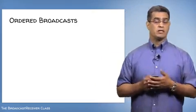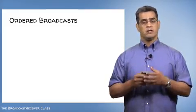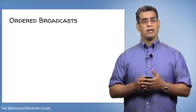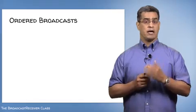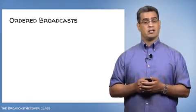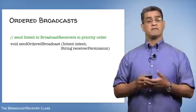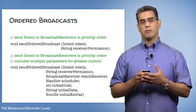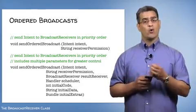So if you really want the broadcast receivers to receive broadcasts in a particular order, or if you want each broadcast receiver to have exclusive access to the intent while it's being processed, then you'll want the broadcast to be ordered. And you'll do that by using a SendOrderedBroadcast method. You can do that using some of the following methods from the context class. The first sends an intent to broadcast receivers that have a specified permission in priority order. The second does the same thing but provides additional parameters for greater control. Let's look at some applications that use these methods to send ordered broadcasts.